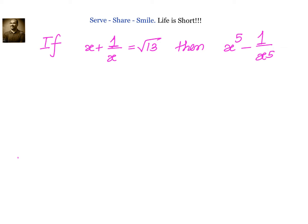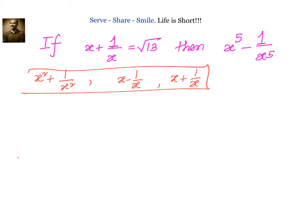With respect to what can we easily find out the answer? What I mean by that is: if I know x plus 1 by x, then I can easily find out x square plus 1 by x square. I can find out x minus 1 by x. I already know x plus 1 by x. Leveraging this, can I change x power 5 minus 1 by x power 5 in terms of values I can easily find out?